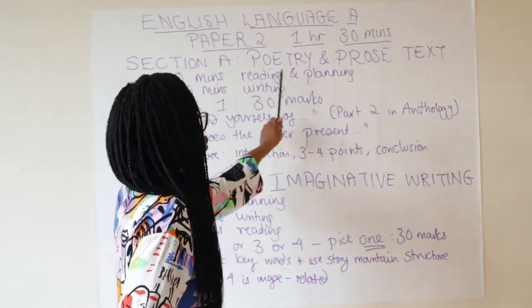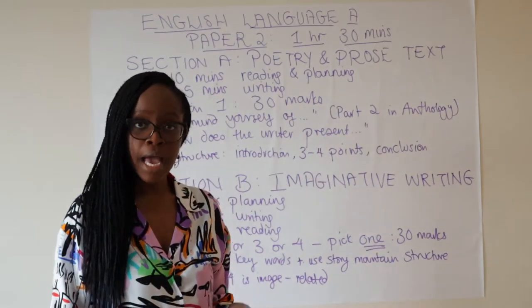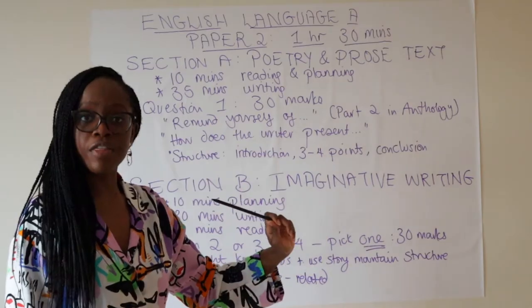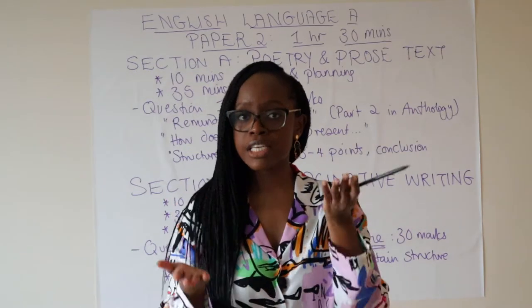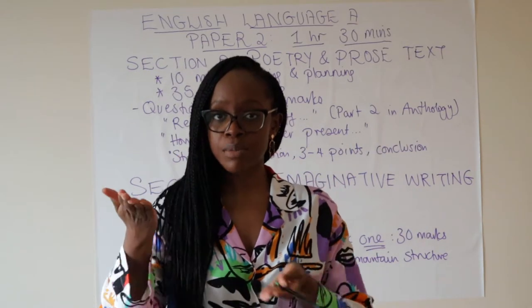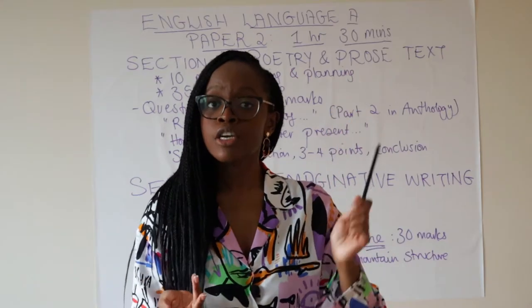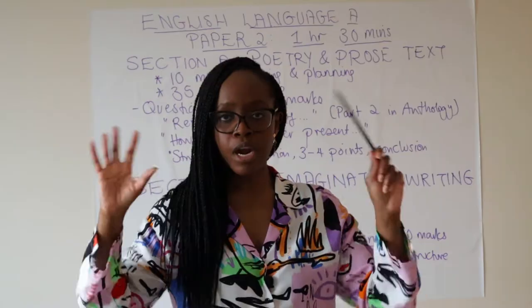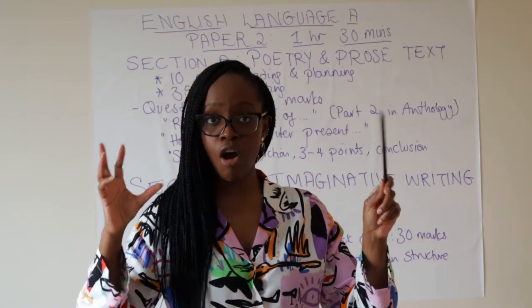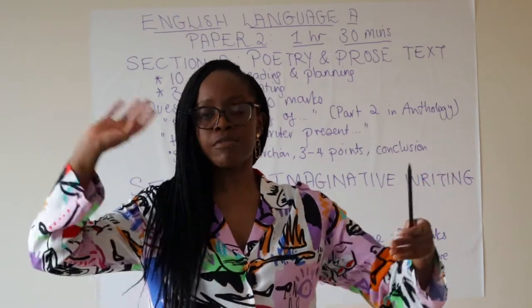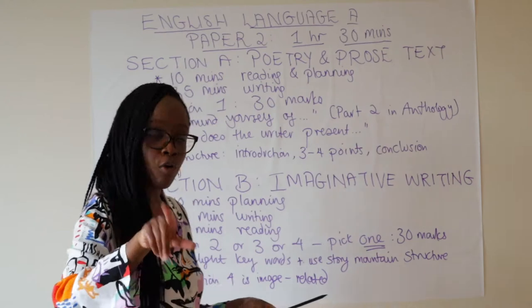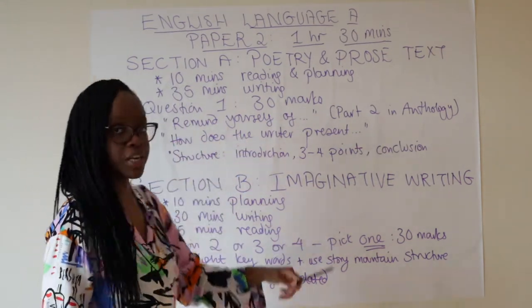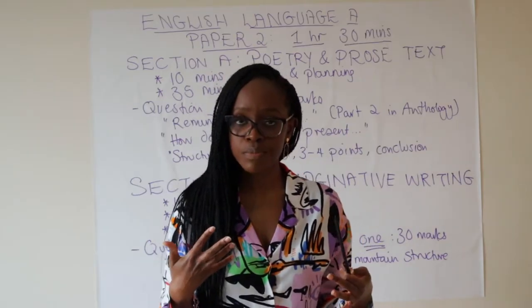Let's begin with Section A, which is the poetry and prose section. Question one always has 30 marks. Bear in mind that Section A and Section B are equally weighted — 30 marks for Section A and 30 marks for Section B. I recommend splitting the one hour and thirty minutes in half, spending 45 minutes for Section A and 45 minutes for Section B.